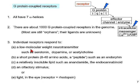Individual receptors respond to low molecular weight neurotransmitters such as serotonin, dopamine, and acetylcholine. Some respond to short peptides of 8 to 40 amino acids — best examples are the endorphins and enkephalins. Some respond to relatively insoluble lipids, such as anandamide, which is the endogenous ligand for the cannabinoid receptors. Others respond to olfactory stimuli, or light in the eye — rhodopsin is in the G-protein-coupled receptor family.